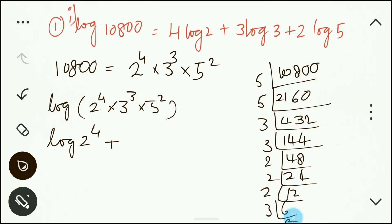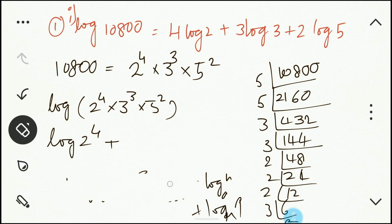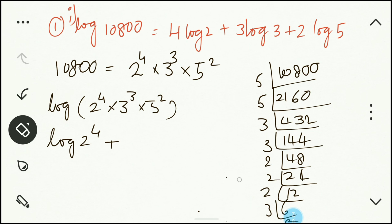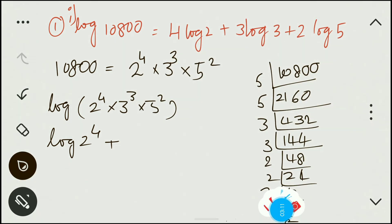The product law states: log(m × n × p) to the base a equals log m to the base a plus log n to the base a plus log p to the base a. We studied this, so don't forget it. That is exactly the law we are applying here.